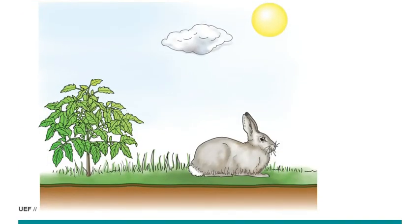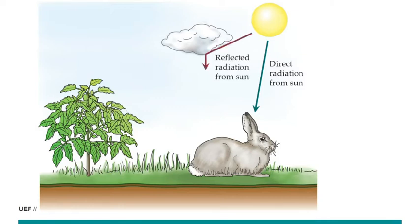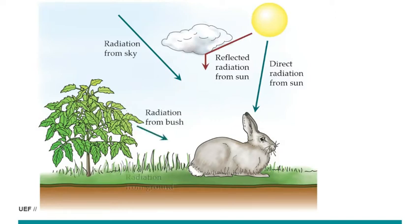Let's take the example of a rabbit in sunlight. The sun is shining, so there is direct radiation from the sun, and most probably this rabbit is feeling the heat from the sun. But the radiation is also reflected from clouds and other material, and there is radiation from the sky, from the bush, and from the ground — though the rabbit is most probably not sensing those.